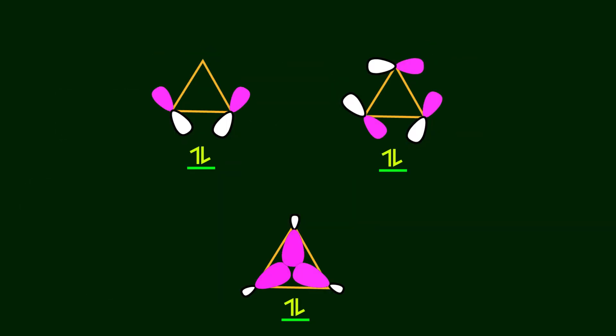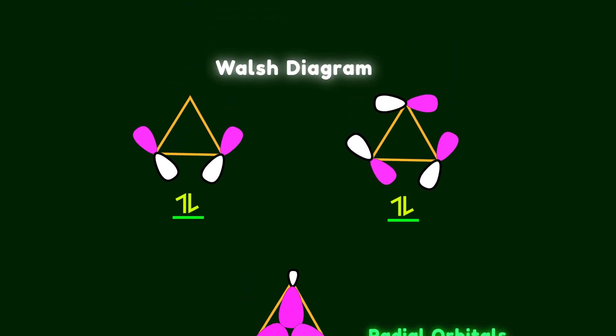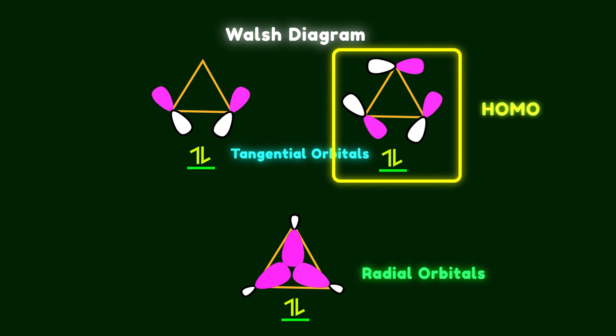Let's have a brief reminder of orbitals in cyclopropane. For describing bonds in cyclopropane from an orbital perspective, we use the Walsh diagram. Based on the Walsh diagram, there are two types of orbitals. In the first energy level, the orbitals point toward the center of the ring — we call them radial orbitals. In the second energy level, there are two degenerate orbitals distributed around the periphery of the ring, known as tangential orbitals. These tangential orbitals have a pi character. The radial orbitals are not accessible for reaction, so we use the tangential orbitals when considering interactions with other groups like the phenyl ring.